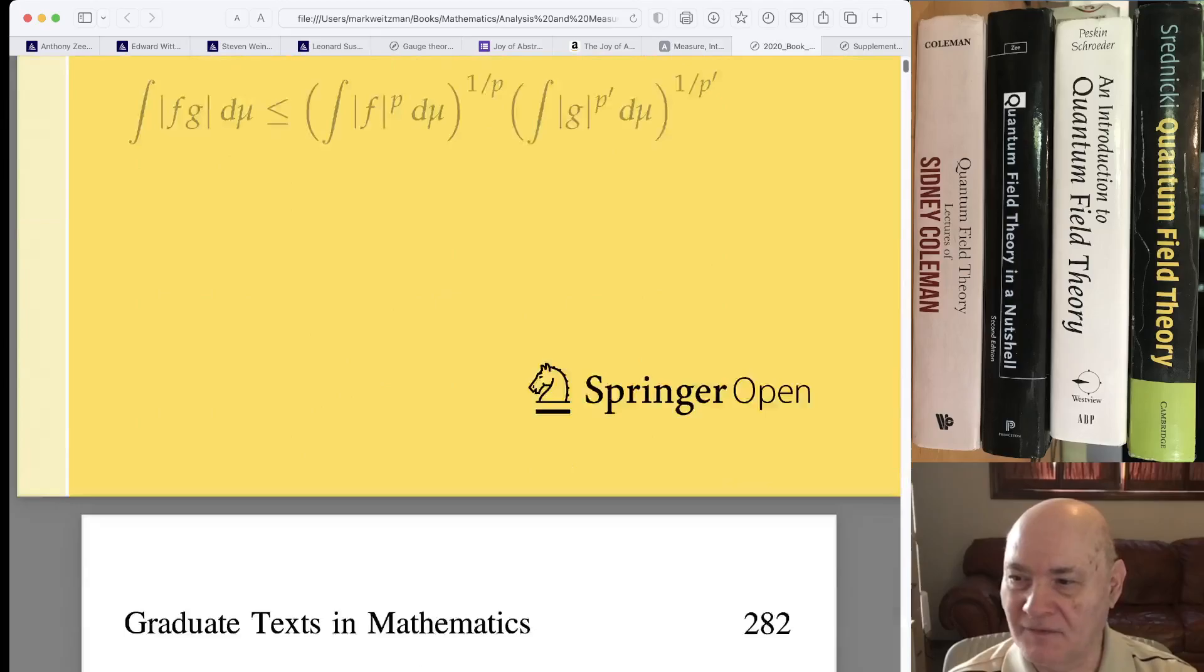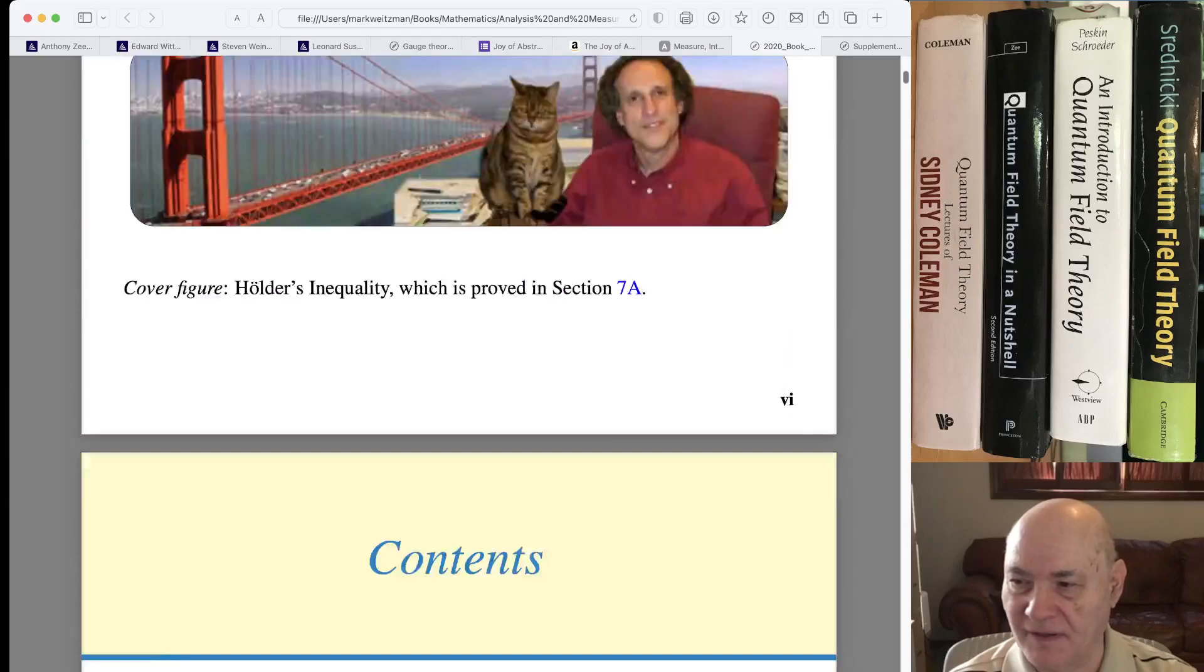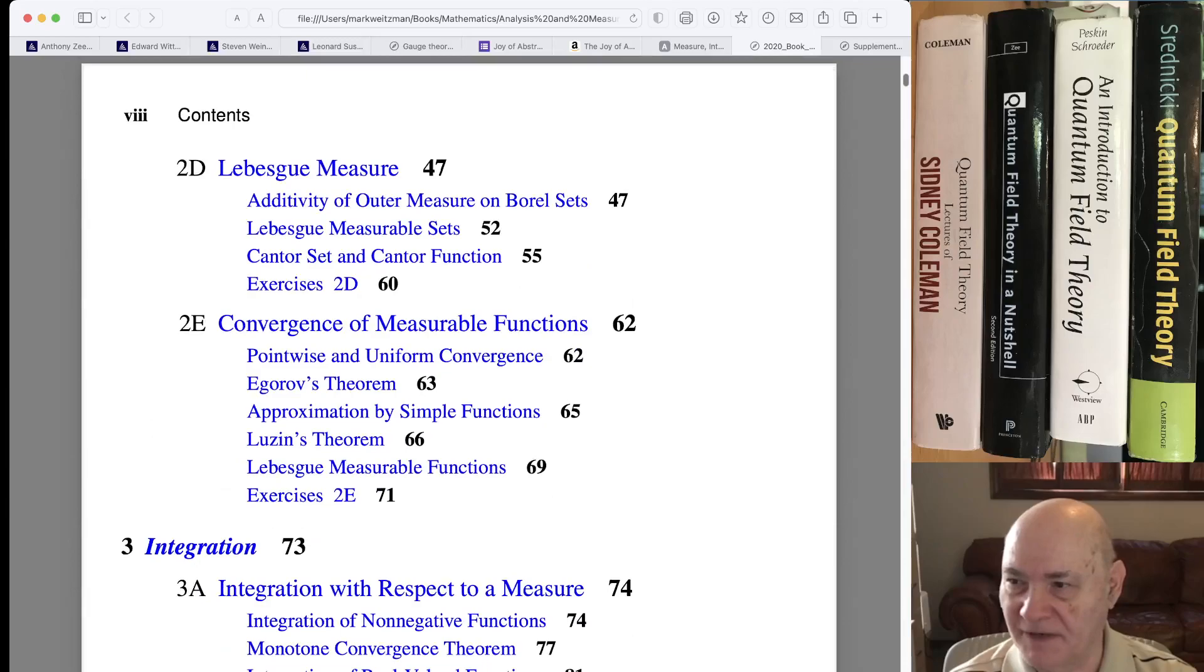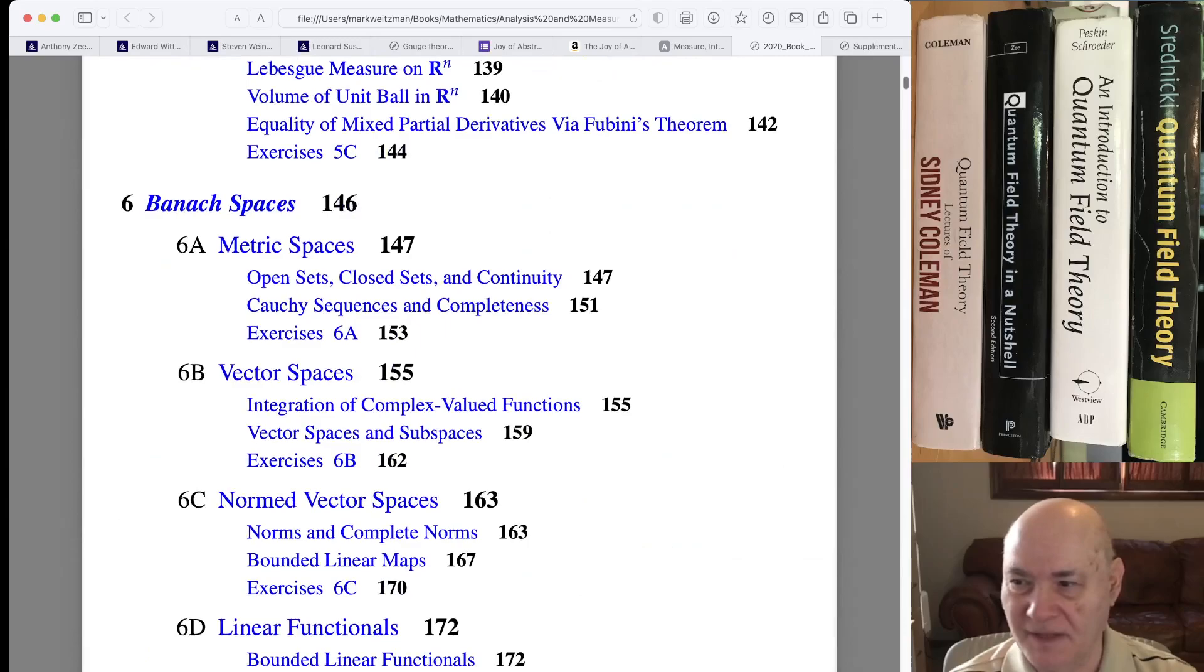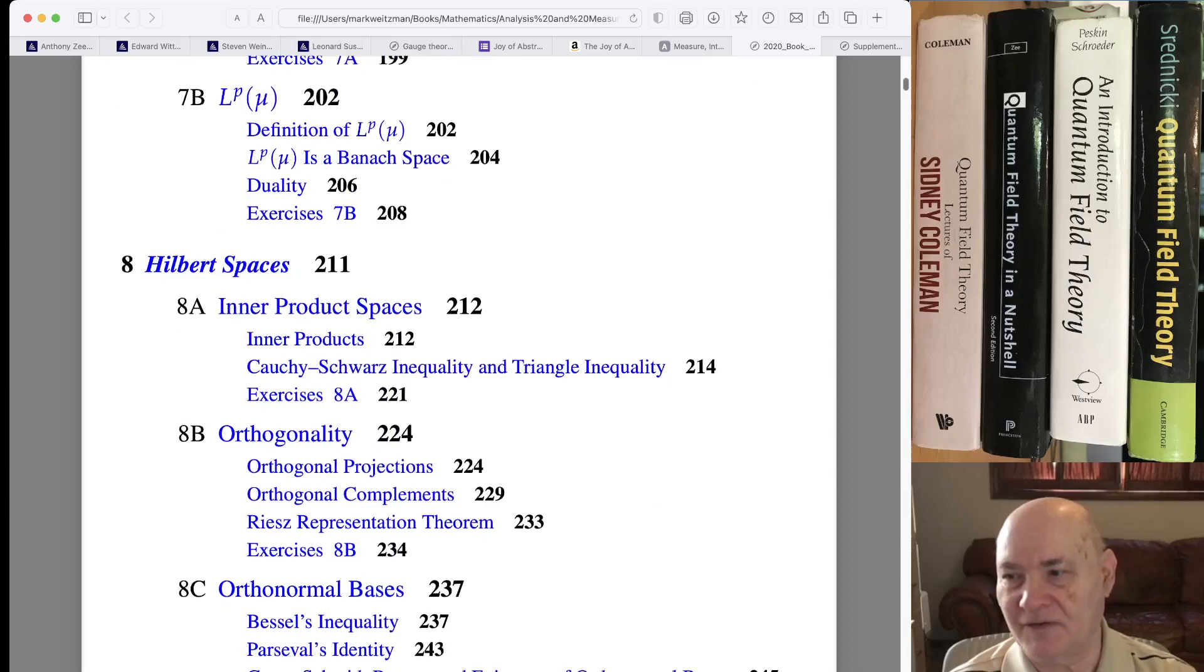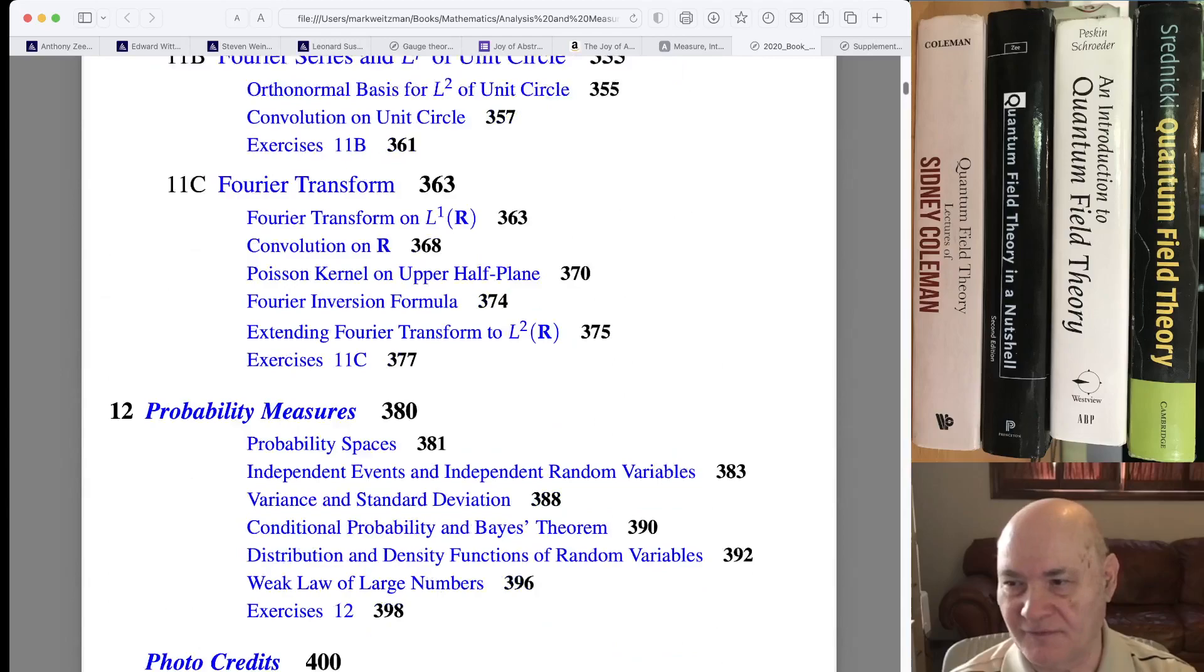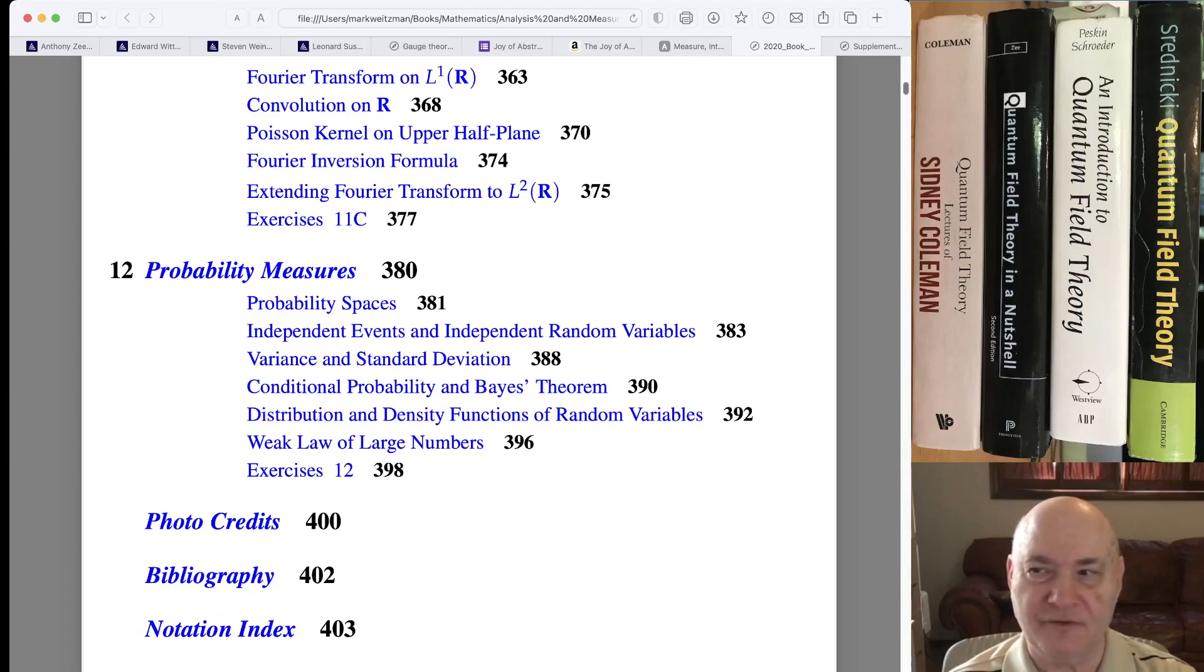I have this in PDF right now. But just to show you, it doesn't cover everything, but it covers measures, Riemann integration, Lebesgue measure, integration, and product measures, and then Banach spaces and LP spaces. These are more interesting for a physicist. And it has a couple of chapters on Hilbert spaces, and a final chapter on Fourier analysis, and a final chapter on probability measures.